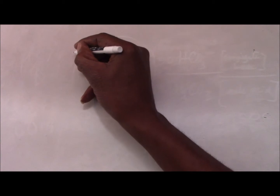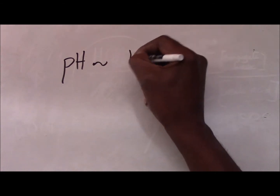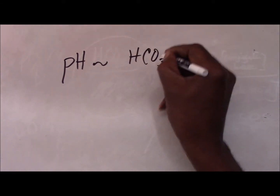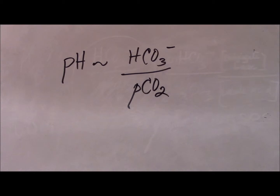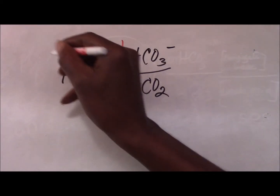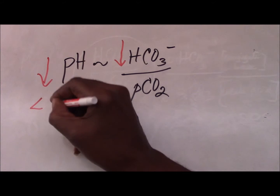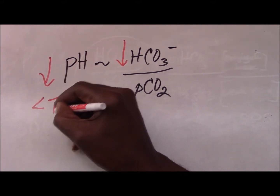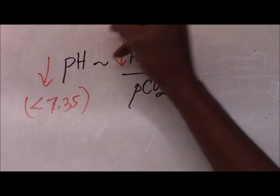Now let us take an example of a case of metabolic acidosis. In this situation, the primary event is a loss of bicarbonate, and the pH is going down — which means the pH is less than 7.35. So this is a case of metabolic acidosis.